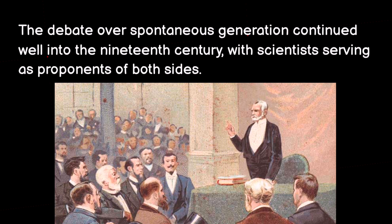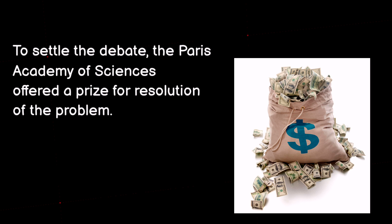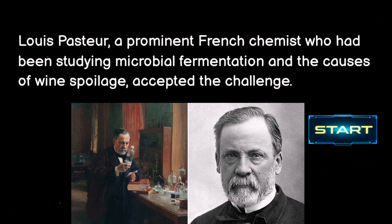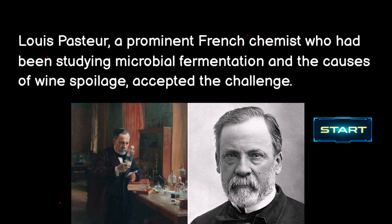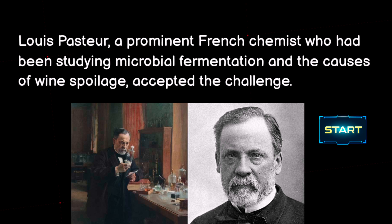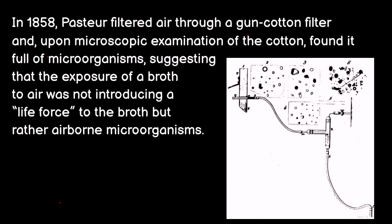The debate over spontaneous generation continued well into the 19th century, with scientists serving as proponents of both sides. To settle the debate, the Paris Academy of Sciences offered a prize for resolution of the problem. Louis Pasteur, a prominent French chemist who had been studying microbial fermentation and the causes of wine spoilage, accepted the challenge.